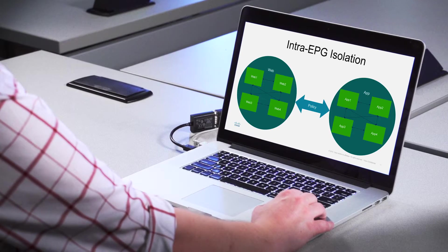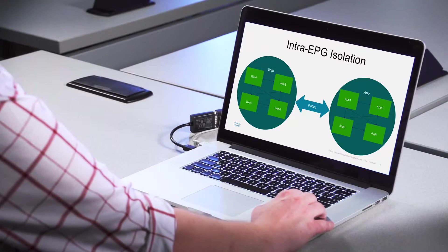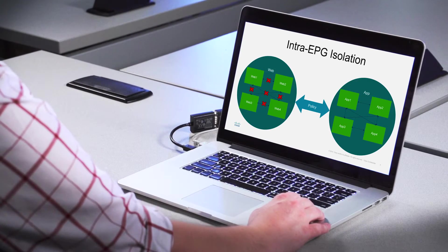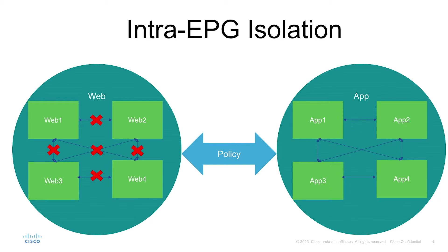If it is set, intra-EPG packets will be dropped. This setting is pushed to the AVS or the DVS as part of the EPG download, and the DVS stores it within the EPG. During the packet path, the EPG setting is checked to decide whether to allow intra-EPG traffic or not.